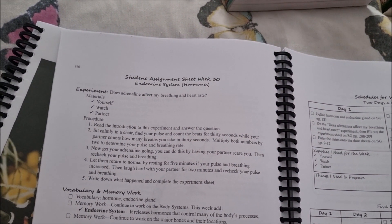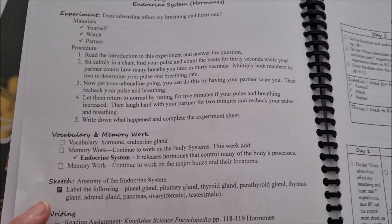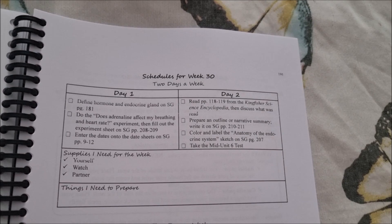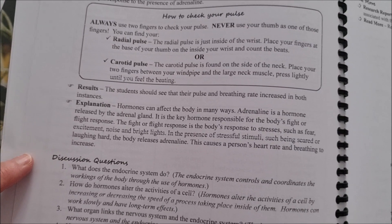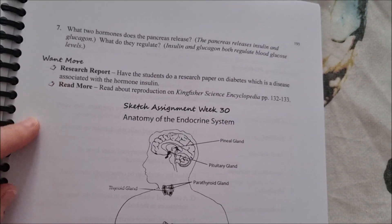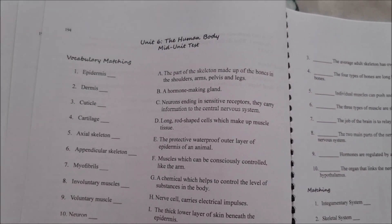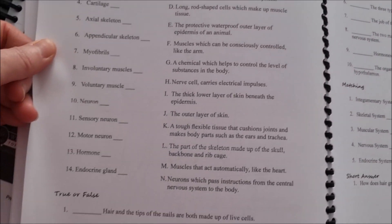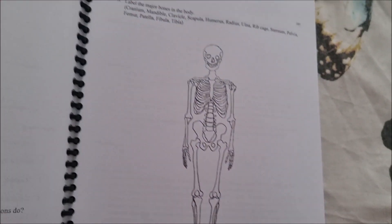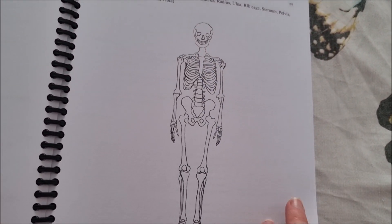Skipping ahead to week 30, which is the endocrine system — again you've got your experiment, vocabulary, memory work, sketch, writing assignment, dates to remember, and your schedule for day one and day two or day five. There's additional experiment information and discussion questions. In the 'want more' section there's a research report. The mid-unit test includes vocabulary, true/false, matching, short answer, and labelling questions.